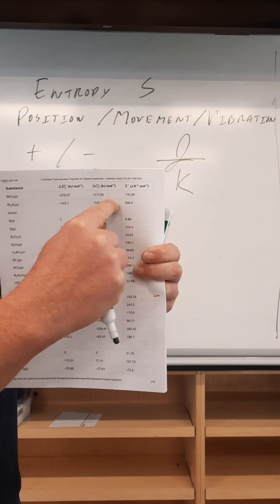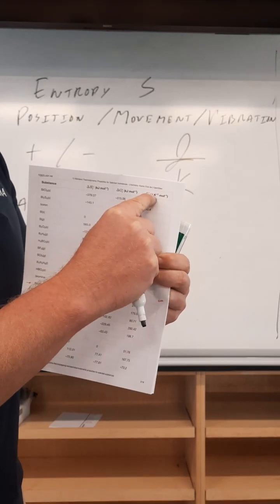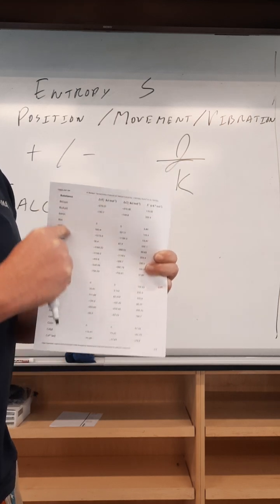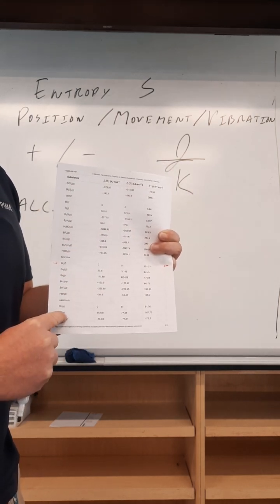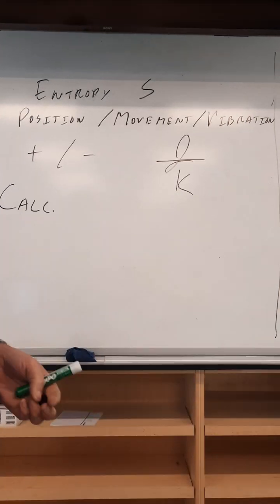The tables contain H, G, and S, and we'll use the tables right here. Note the S column and note the states of matter in the formulas. Really look over this stuff with a fine-tooth comb because I make mistakes all the time not being diligent about the details here.